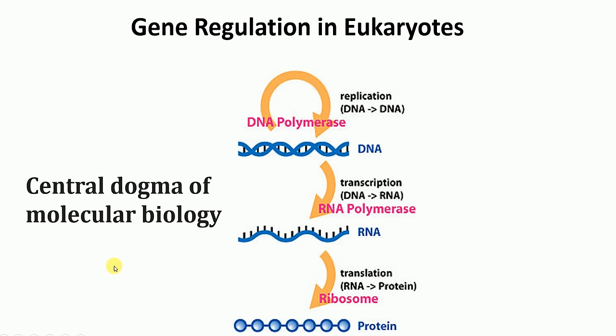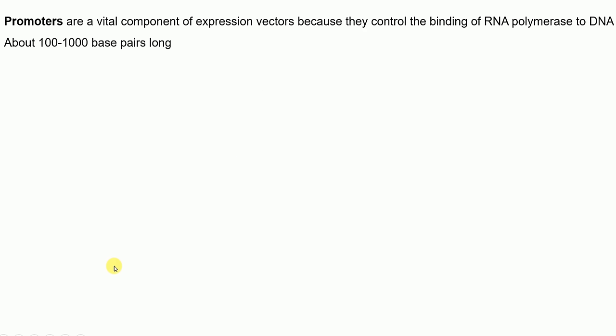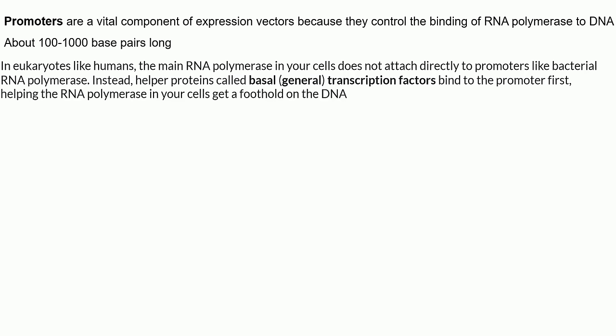Now I want to talk about promoters. Promoters are a vital component of expression vectors or expression systems because they control the binding of RNA polymerase to the DNA. They are about 100 to 1000 base pairs in length. In eukaryotic organisms like humans, the main RNA polymerase in our cells does not directly bind to the promoters — unlike in bacteria, where RNA polymerase binds directly to the promoters.